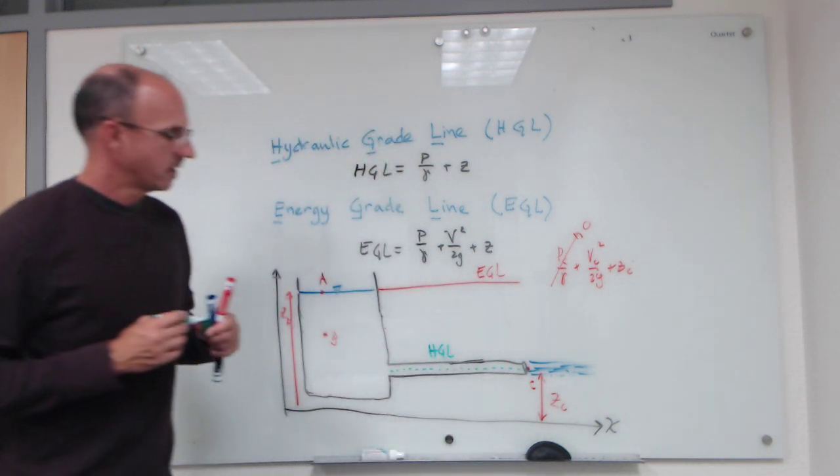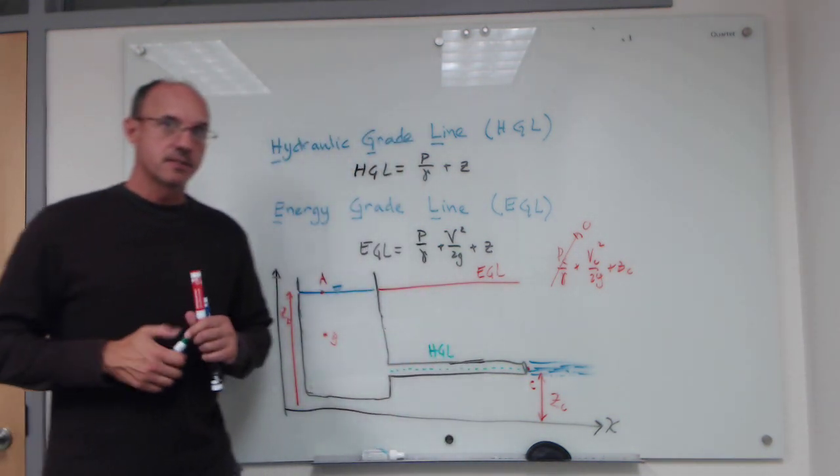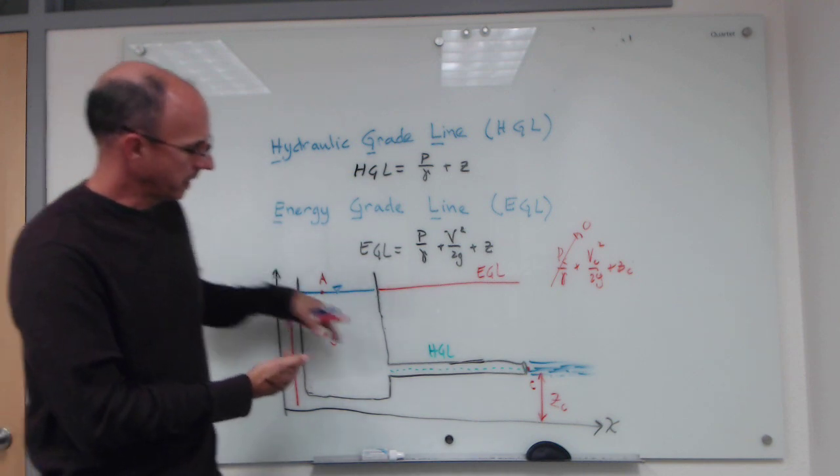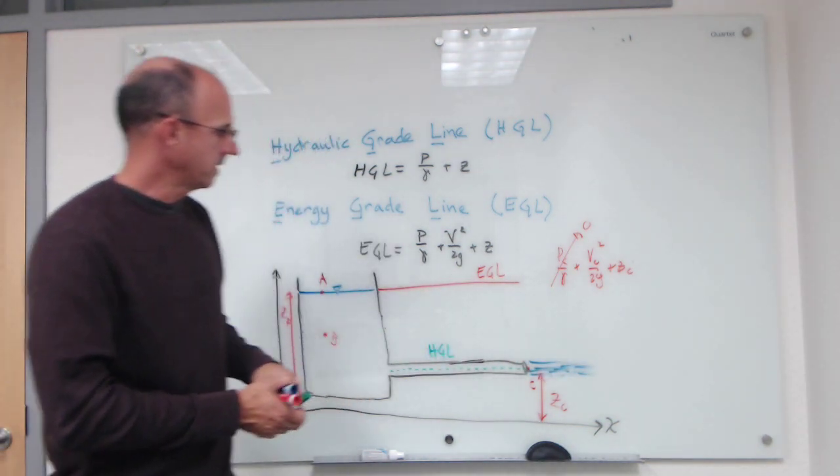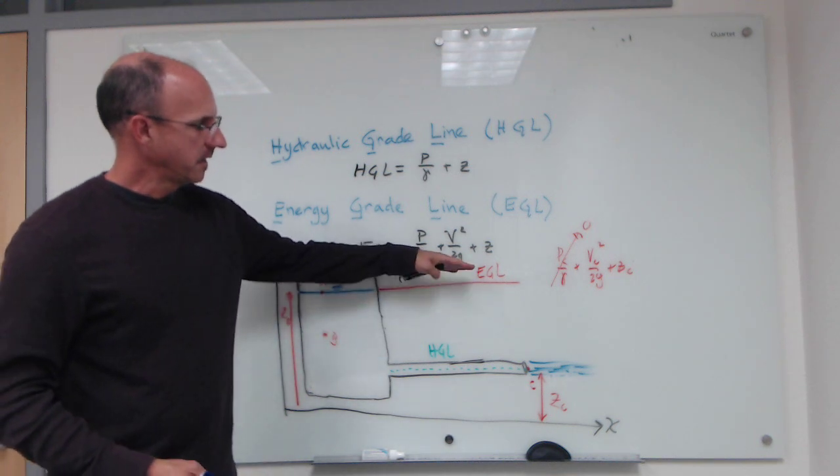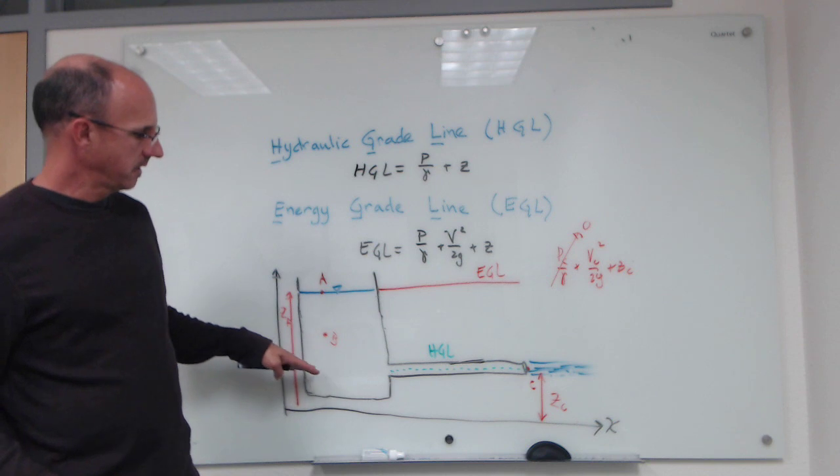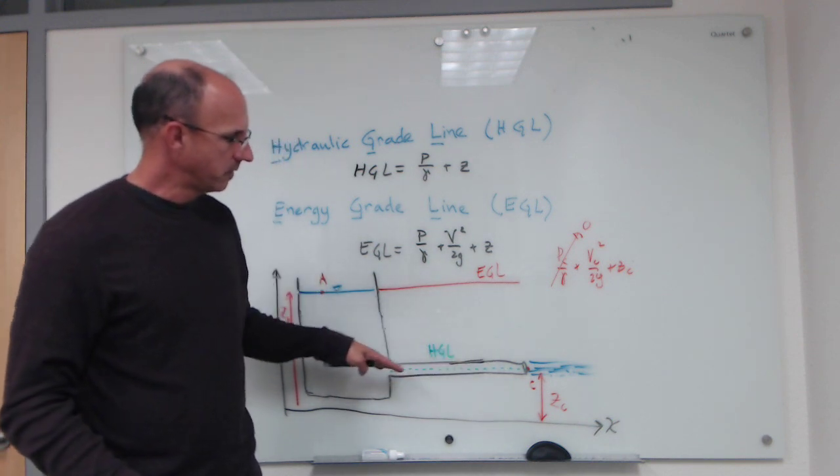So in this simple case involving a tank with stored water flowing into the pipeline and leaving the pipeline, the energy grade line is just a horizontal surface equal to the reservoir height, and the hydraulic grade line is just a horizontal line equal to the height of the pipe.